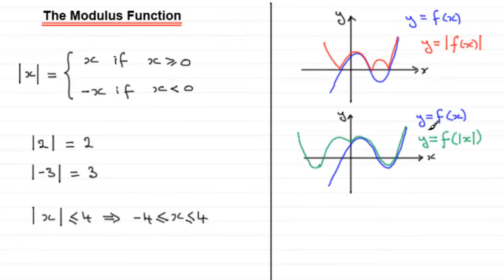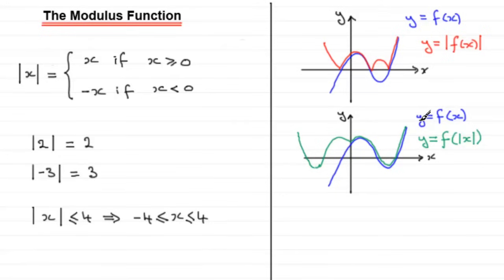I'll also show you graphs of y equals f of the mod of x. If you've got y equals f of x shown by the blue curve, then for y equals f of the mod of x, all that happens is the right-hand side of the y-axis is taken and reflected in the y-axis, giving you this symmetric shape of curve.